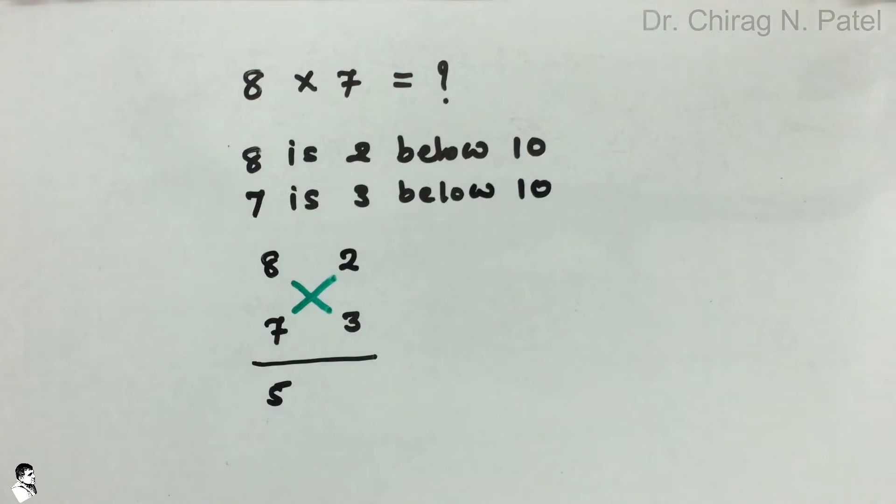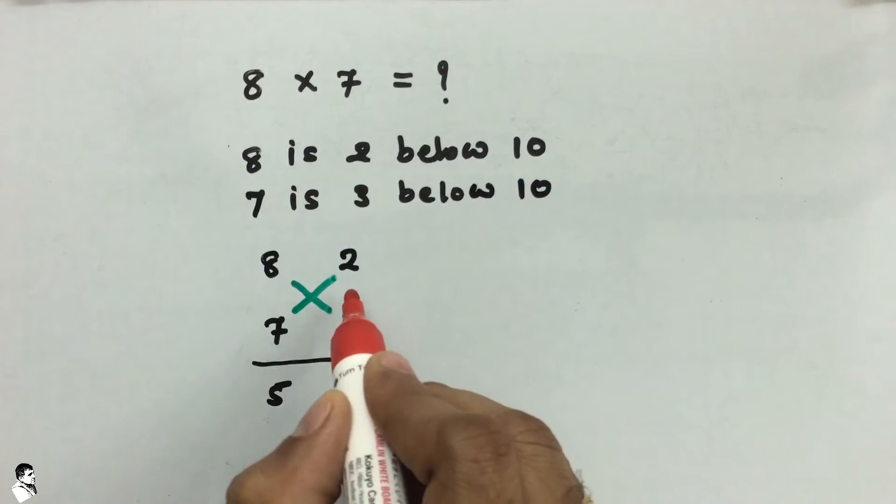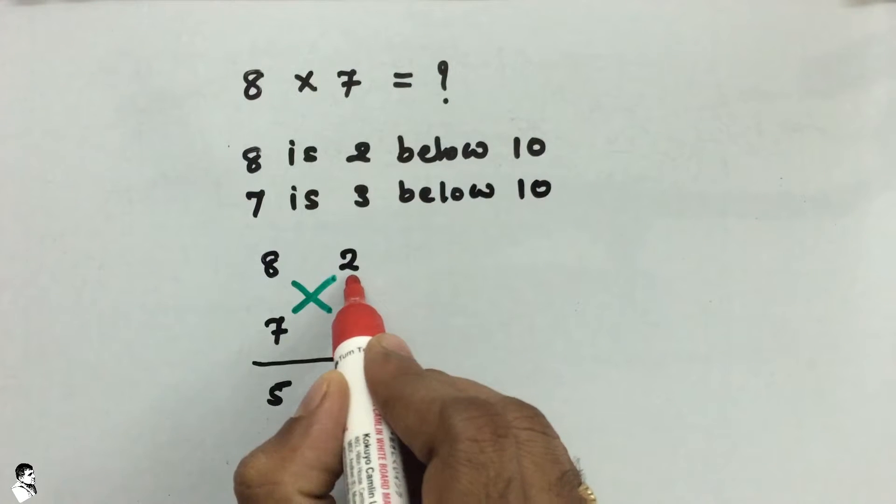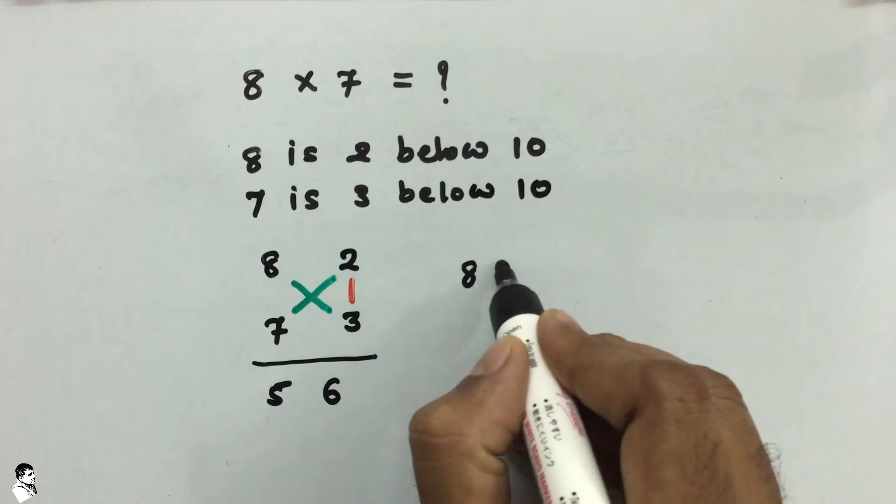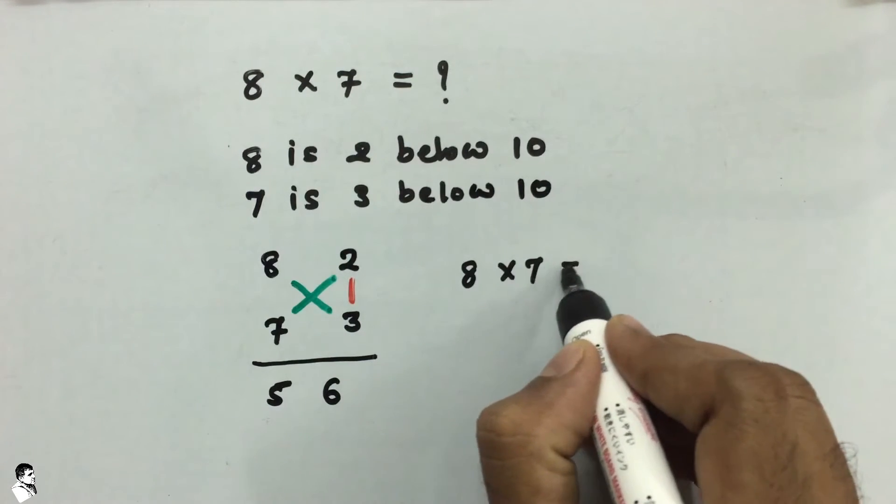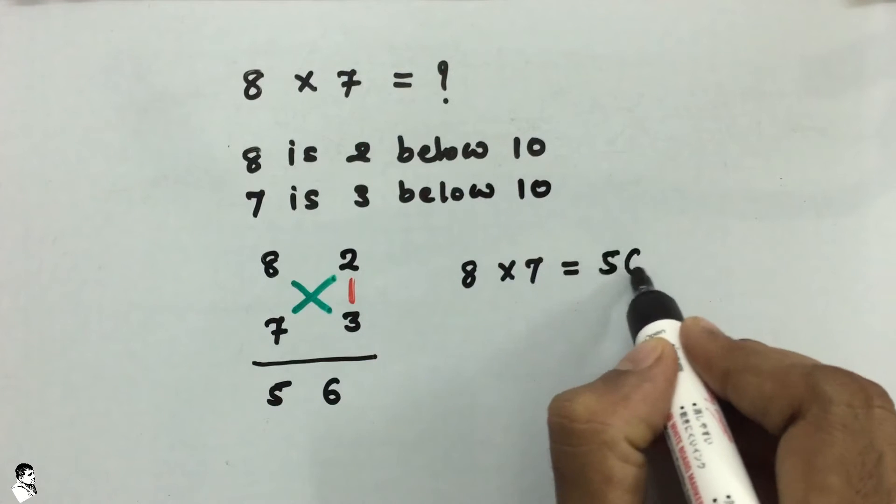And second is a vertical calculation. So this vertical calculation is between 2 and 3. That process requires multiplication between those two numbers. So 2 into 3 that is 6. So the answer of 8 into 7 is equal to 56.